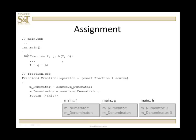I'm going to declare h to be two-thirds. So I'll pass in 2 and 3, and the constructor is appropriately called — 2 is going to be the numerator, 3 is going to be the denominator. So then I'm going to assign h to g to f. So in main we have f, g, and h. h has the values 2 and 3 for numerator and denominator.